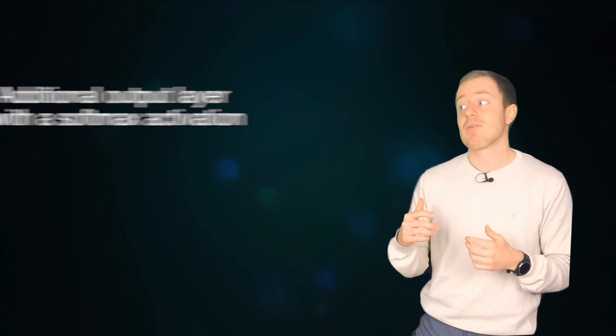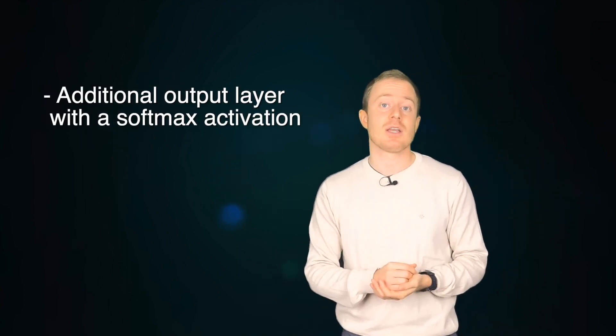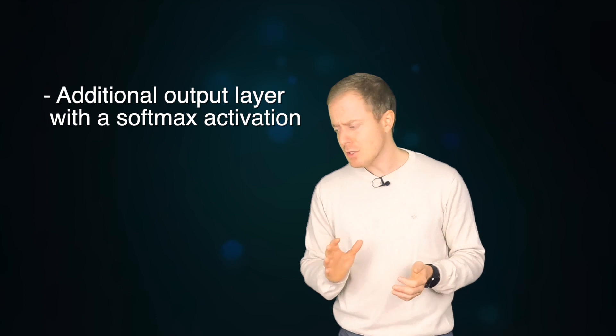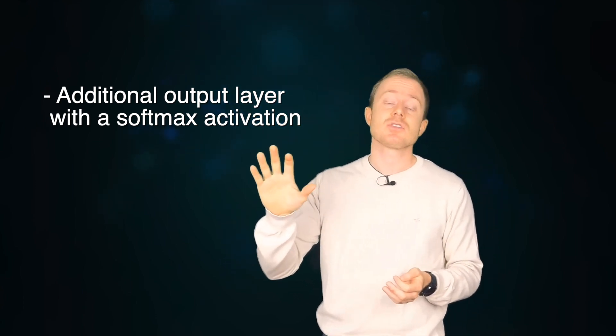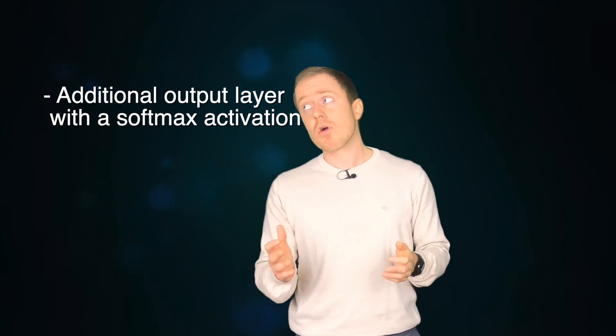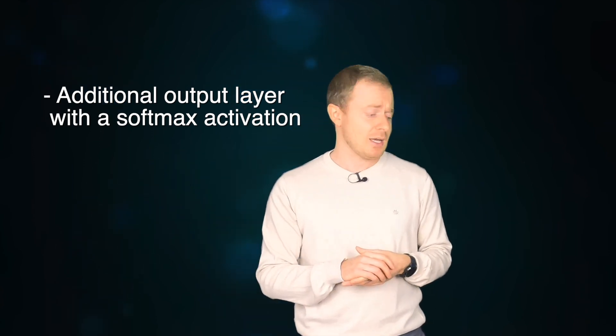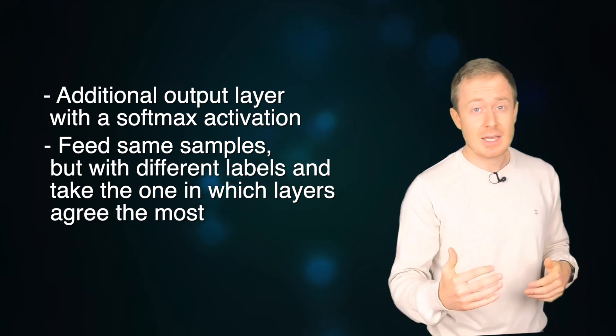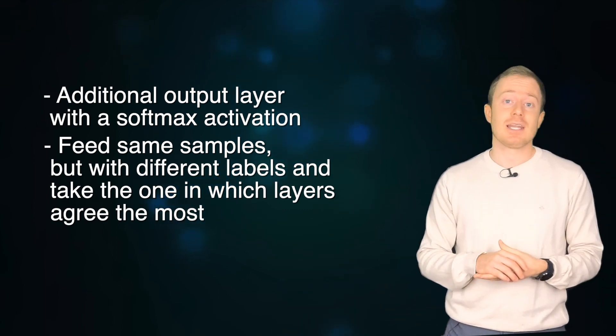Finally, if you think about it, also predictions in a simple classification problem are not so straightforward. If everything goes well, we have distributed representations of our dataset, but not an output layer to predict our classes. So as proposed also by Hinton, we can proceed in different ways. For instance, we can create an additional output layer with softmax activation at the end of the training. We don't need to backpropagate, but we use the representations learned by the network during the training. Or if you fuse labels during training, we can simply feed samples fusing different labels and take the one in which layers agree the most.